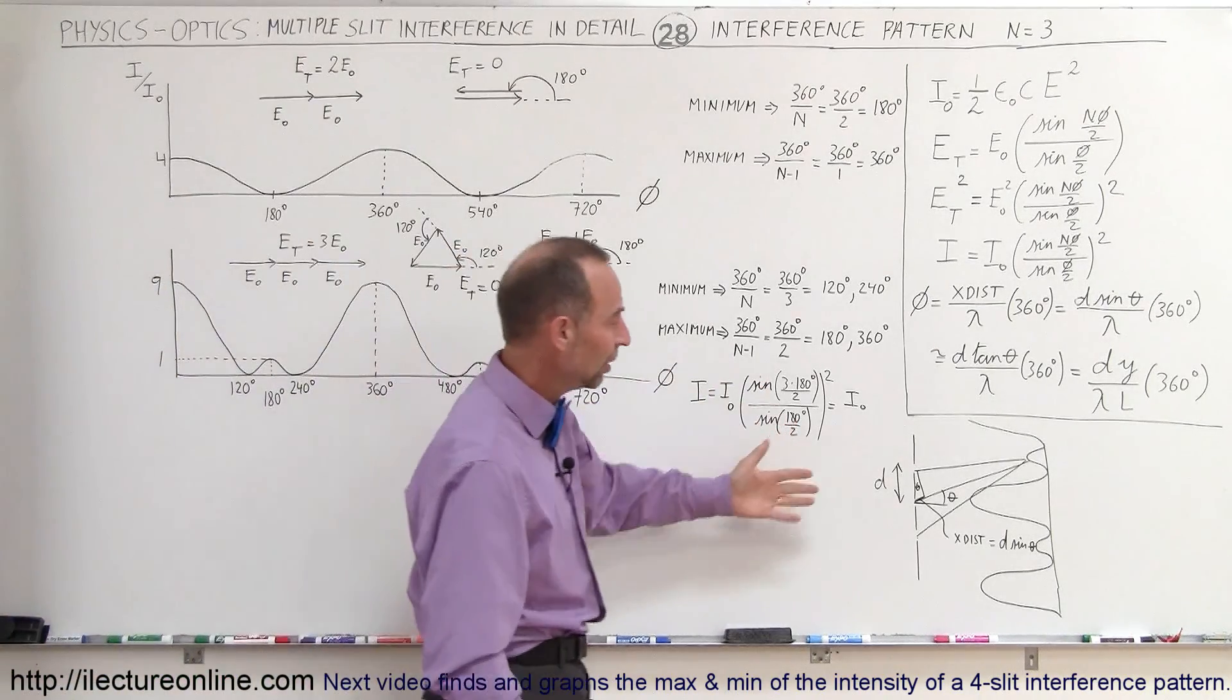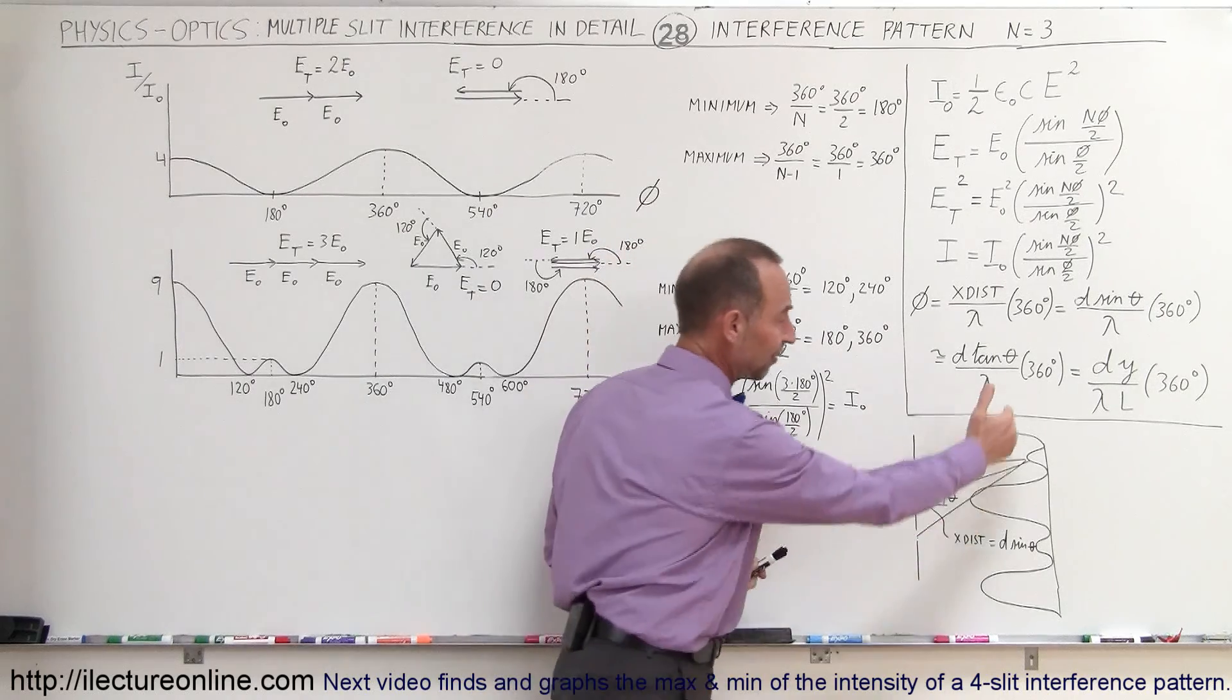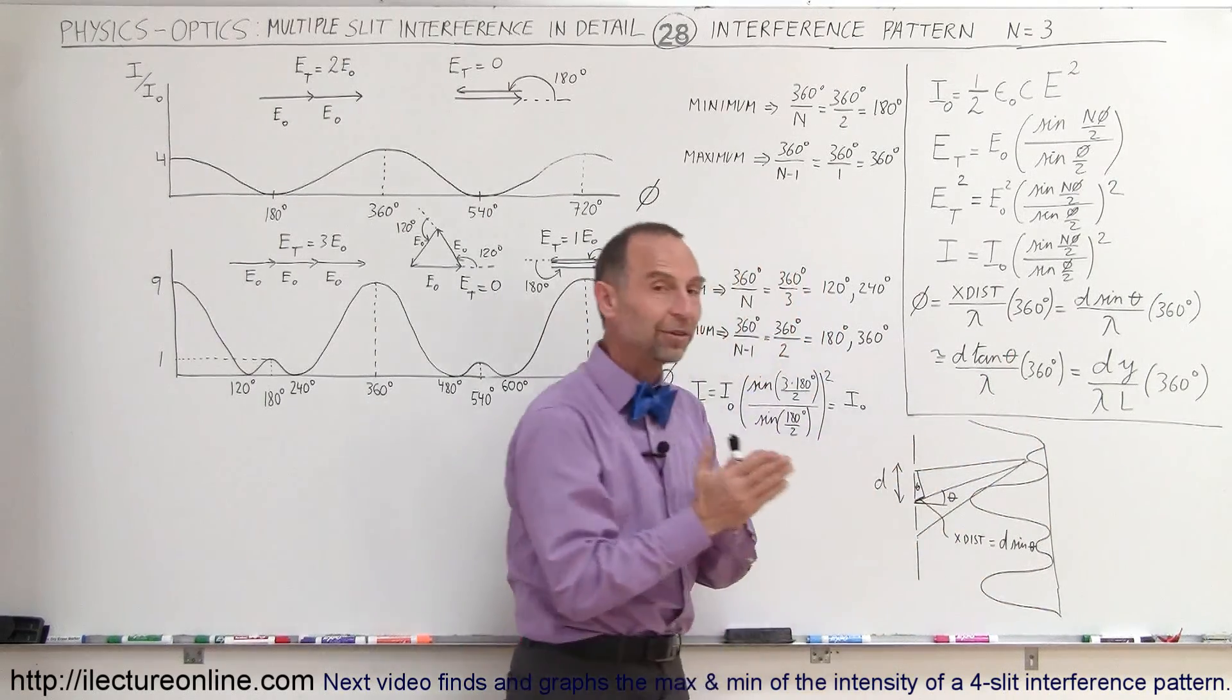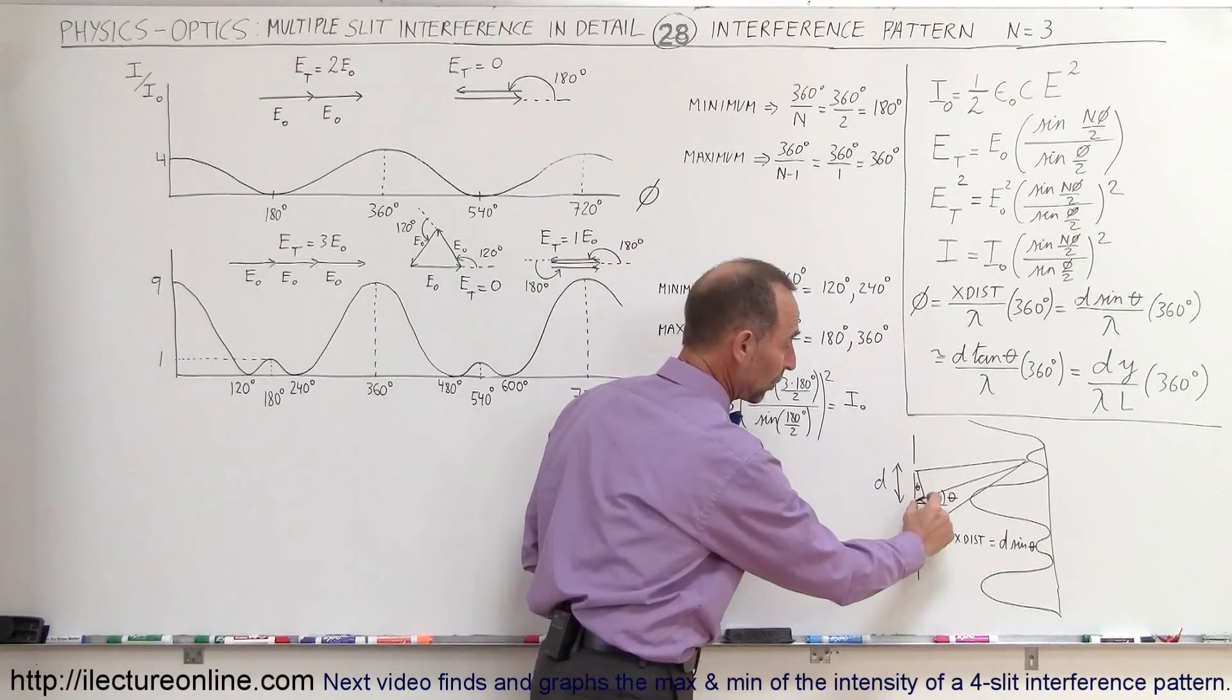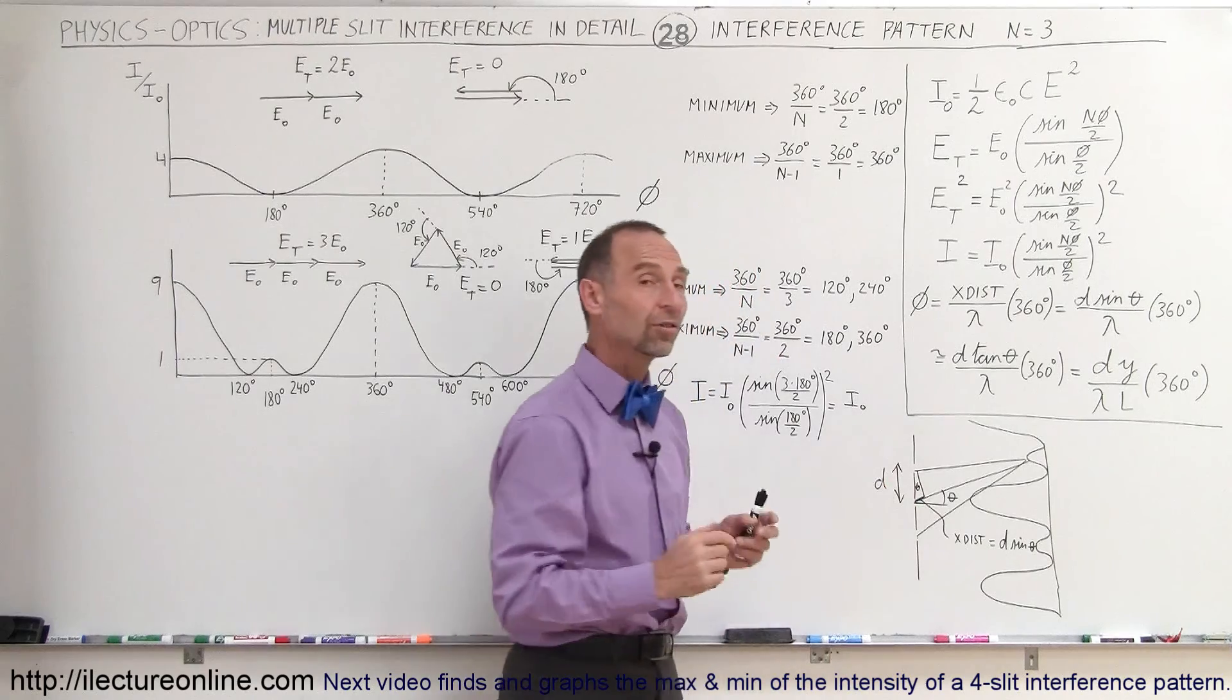So here we have a three-slit situation. Monochromatic light is entering the three slits, and of course at different places on the screen, the various rays will have traveled different distances. This ray will have traveled extra distance here.